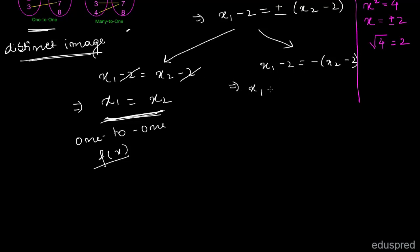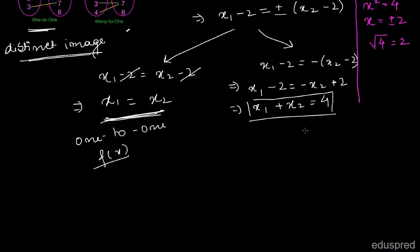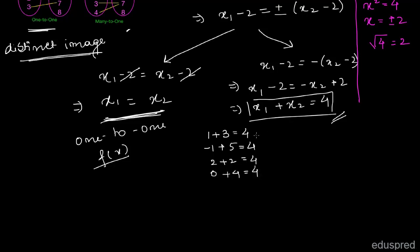Now let's come to Case 2. Solving this case, x1 minus 2 is equal to minus of (x2 minus 2), which gives us x1 plus x2 is equal to 4. We know that x1 and x2 are both real numbers, so there can be infinite combinations where x1 plus x2 equals 4. Some possible combinations are: 1 plus 3 equals 4, minus 1 plus 5 equals 4, 2 plus 2 equals 4, or 0 plus 4 equals 4.